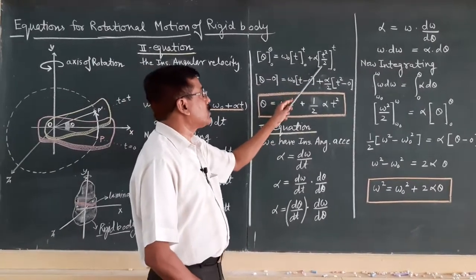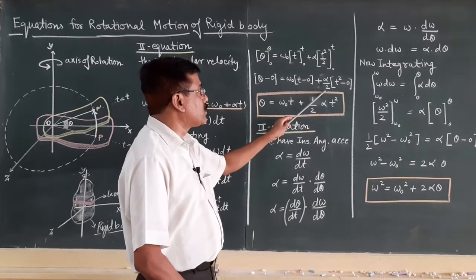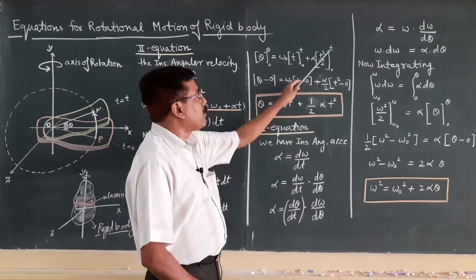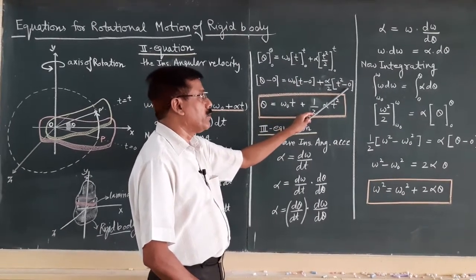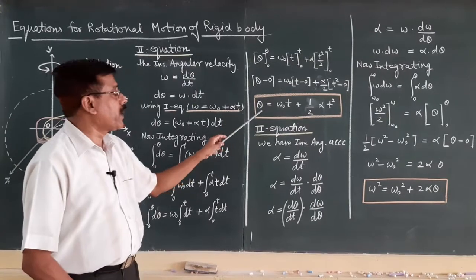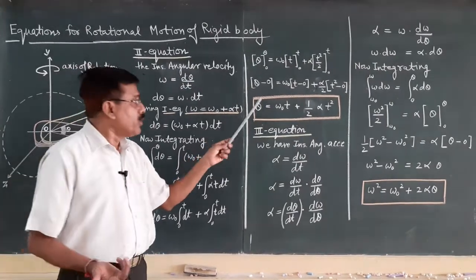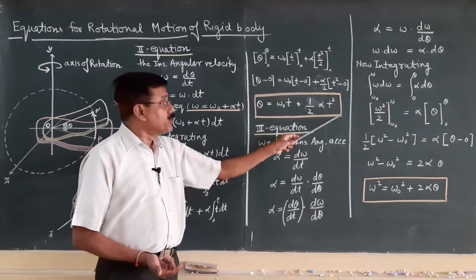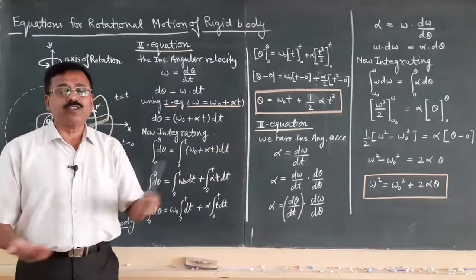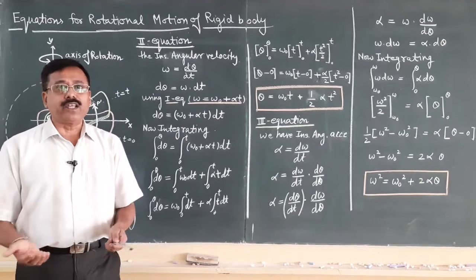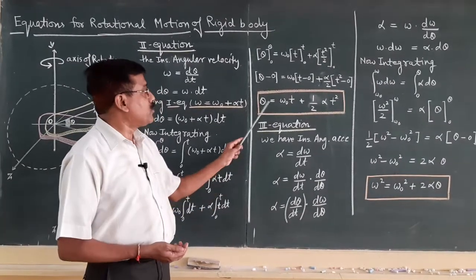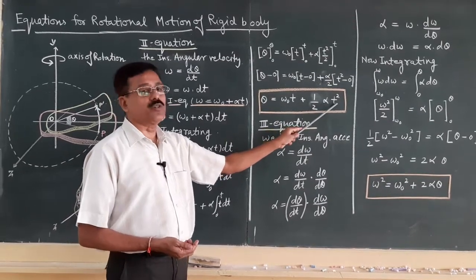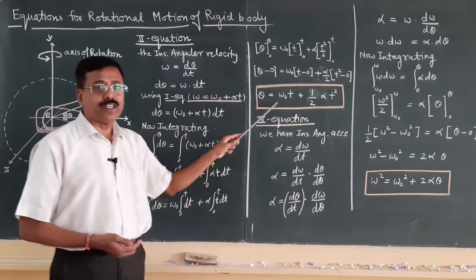Since one-half is constant, alpha over 2 remains outside the integrated value, and applying the limits gives t-squared minus 0. Simplifying further, we get theta equals omega-zero t plus one-half alpha t-squared. This is the second equation of motion for rotation. It resembles s equals u t plus half a t-squared, but this equation is for rotation.